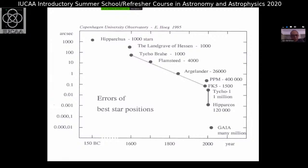Hipparchus carried out his observations around 150 BC — about 2,200 years before our time — and made a careful catalog of stars. His catalog had 1,000 stars. The positional accuracy was known to within about 1,000 arcseconds, which is an accuracy of about one-third of a degree. He also made notes about the brightness of stars, introducing five brightness classes.